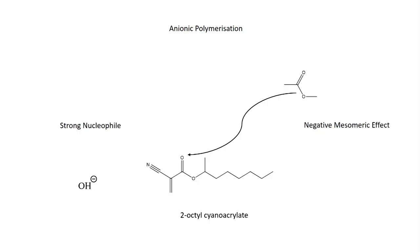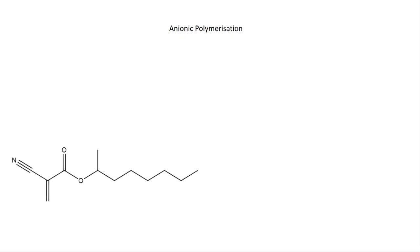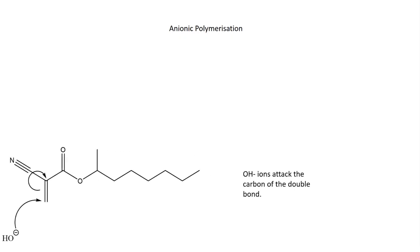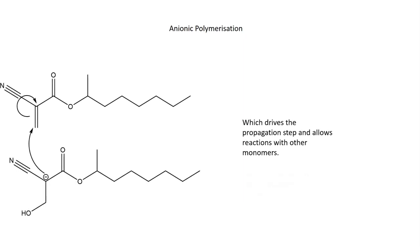The OH⁻ ions attack the first carbon of the double bond. Here the cleavage is heterolytic — both electrons from the carbon-carbon double bond are localized onto the adjacent carbon atom, forming a carbanion. The reaction propagates and the carbanions now act as nucleophiles, reacting with other cyanoacrylate monomers until they have all been used up.